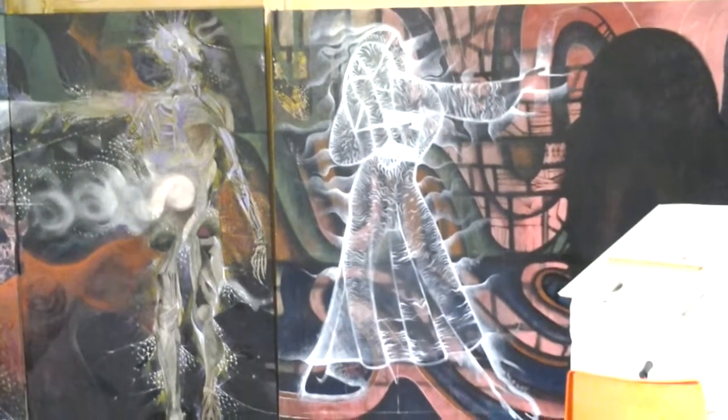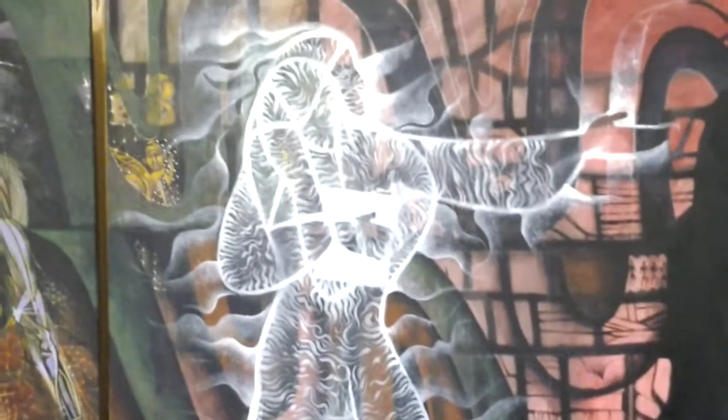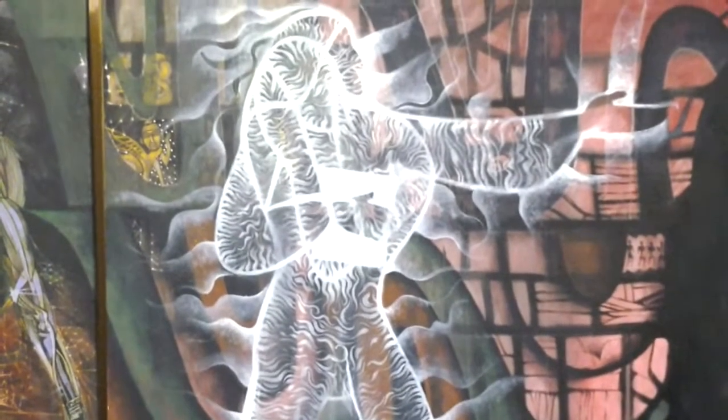Because this is man, E equals MC squared man. That's the next point of this painting. This is man who is E equals MC squared.